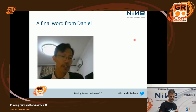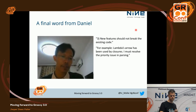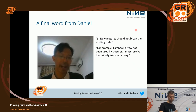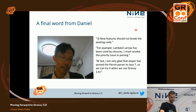I'd like to end with a word from Daniel: New features should not break existing code. For example, Lambda's arrow has been used by closures. I must resolve the priority issue of parsing. At last, I'm very glad that Jasper has ported the Parrot parser to Groovy 2.7, so we can try it when we use Groovy 2.6+. Thank you, Jasper. That's all. Thank you.